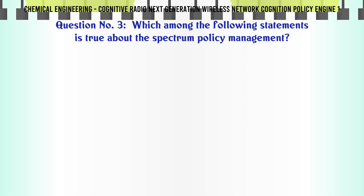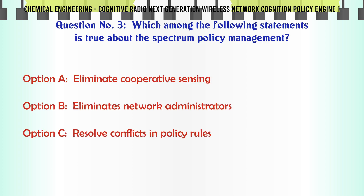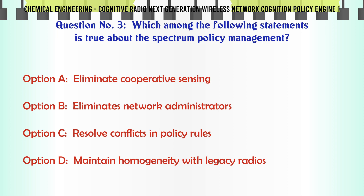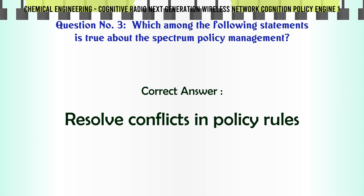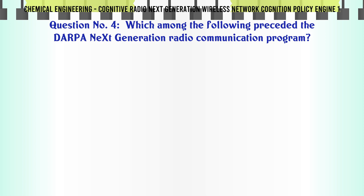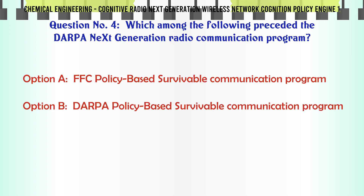Which among the following statements is true about the Spectrum Policy Management? a. Eliminate Cooperative Sensing. b. Eliminates Network Administrators. c. Resolve Conflicts in Policy Rules. d. Maintain Homogeneity with Legacy Radios. The correct answer is: Resolve Conflicts in Policy Rules.